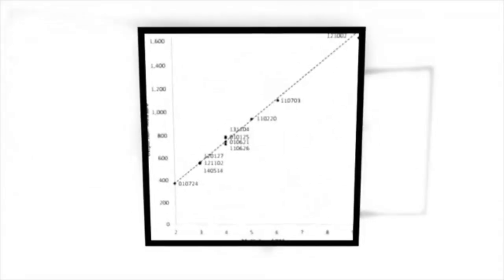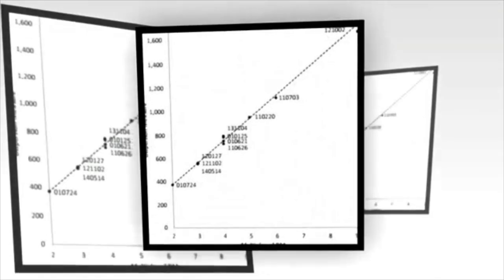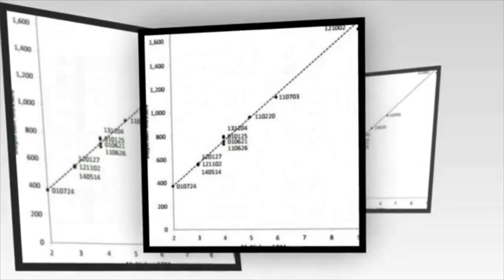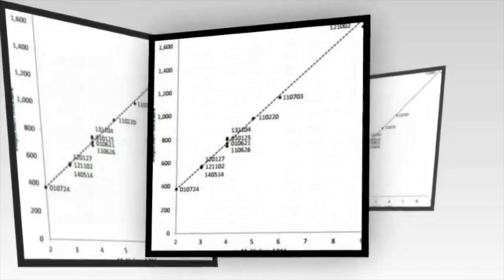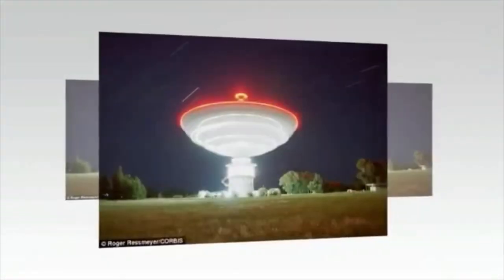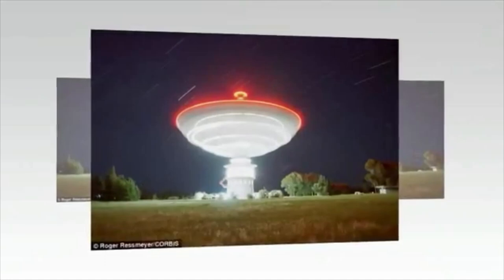A series of mysterious pulsing signals coming from outside our solar system form a strange unexplained pattern, researchers have revealed. Known as fast radio bursts, just 10 have been discovered, and astronomers have no idea what they are.